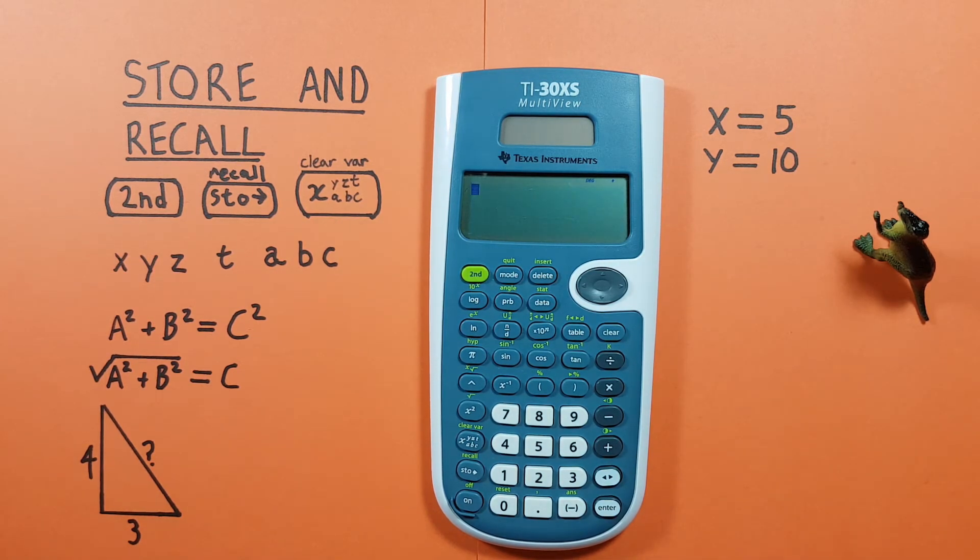The memory functions can be extremely helpful when doing long or complex equations. An example of this would be doing a Pythagoras equation to solve a triangle. Let's say we were given this triangle with 2 known sides and wanted to solve for the third. Well, we know that a squared plus b squared equals c squared. So if we have 2 known sides and we call this our a side and this our b side, we can solve for our c side.